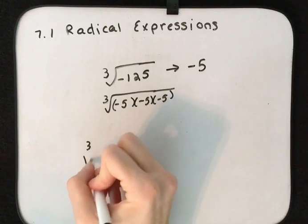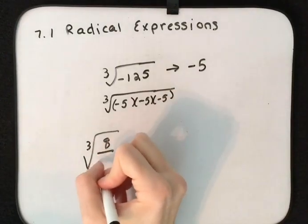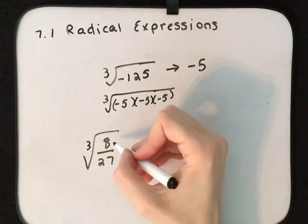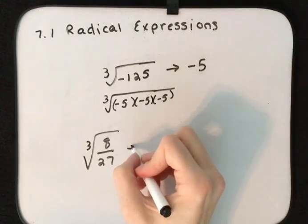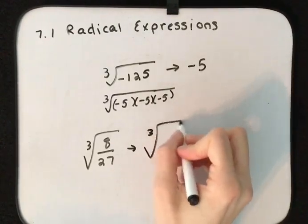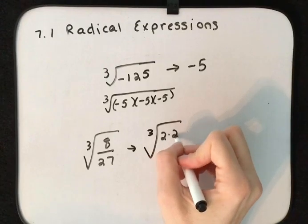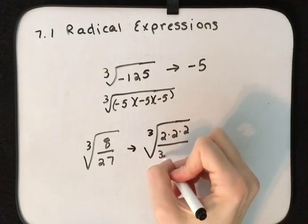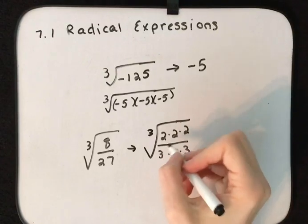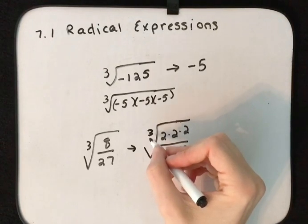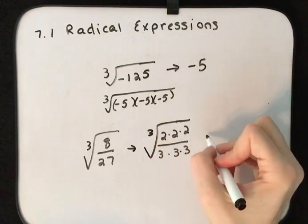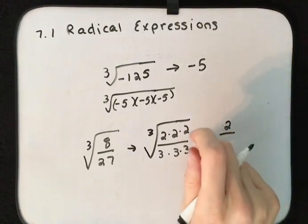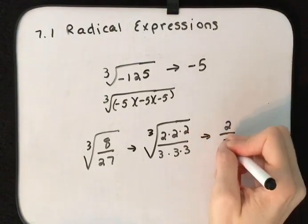Let's look at the cube root of 8 over 27. What times itself three times gives us 8? We could write 8 as 2 times 2 times 2, and 27 as 3 times 3 times 3. So the cube root of 8 is 2 and the cube root of 27 is 3.